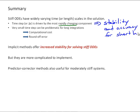That very small time step can be problematic, especially if we want to do a long integration, because of computational cost and potential build-up of round-off error. Implicit methods offer increased stability for solving those stiff ODEs, but they're more complicated to implement.